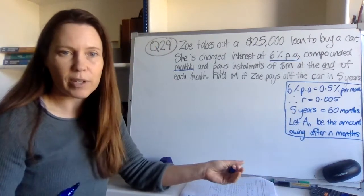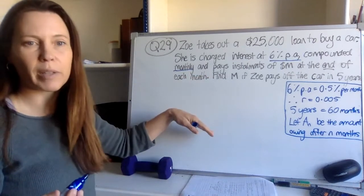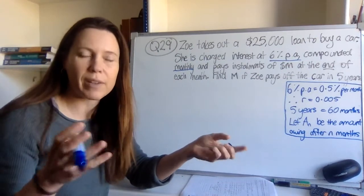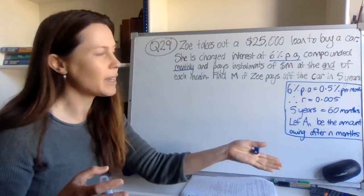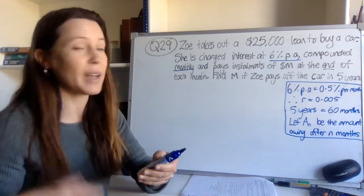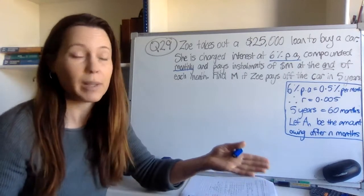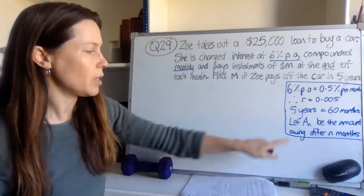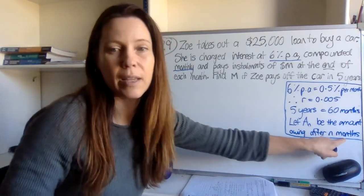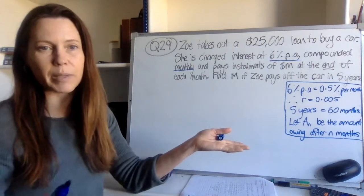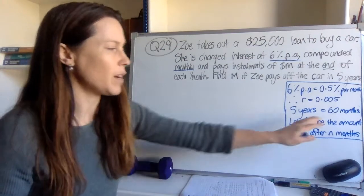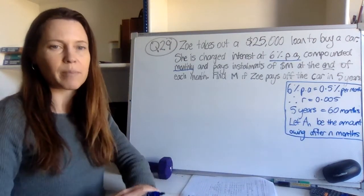I need some sort of expression, some sort of recursive formula to show how much is owing. It's a loan. So on that first day of the loan, Zoe owes $25,000. But by the last day, at the end of the five years, she owes nothing. So I need to come up with some kind of expression for how much she owes at any one time — once a month, at the end of each month. I'm going to let a_n be the amount owing after n months. Defining it helps me keep it really straight in my mind what I'm doing.